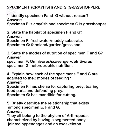Specimen F is crayfish; Specimen G is grasshopper. These are the likely questions you might see under Specimens F and G. Number one: identify Specimen F and G without reason — F is crayfish and G is grasshopper. Number two: state the habitat of Specimen F and G — Specimen F lives in fresh water or muddy substrate; Specimen G lives in farmland or grassland.